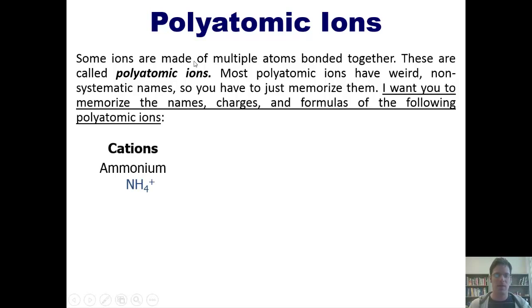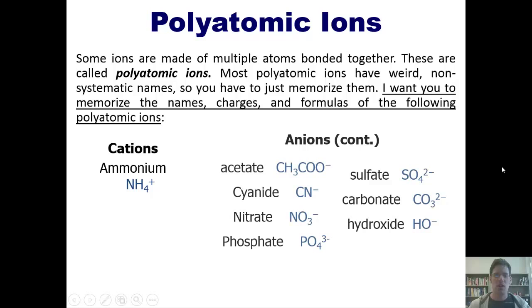In the cation category, we have NH4 plus 1, which is called ammonium. And in the anion category, we have these polyatomic anions. Now if you need to, please make sure that you pause here, review these, and ensure that you have all of the formulas, names, and charges of these memorized before we go on.